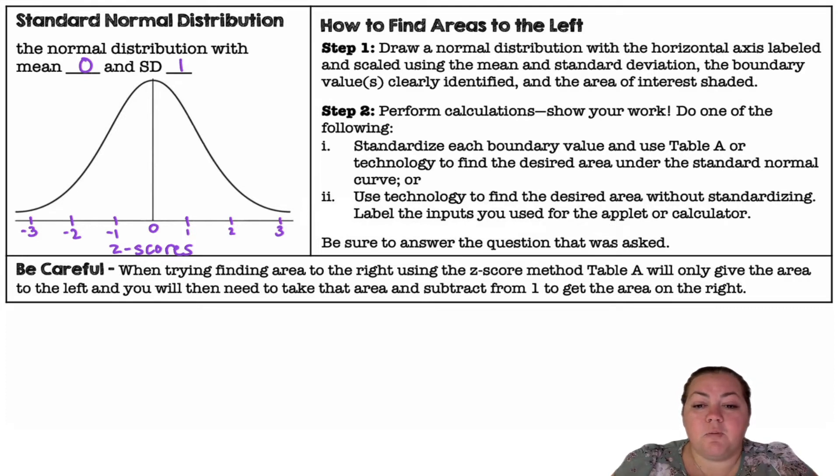Step 2, you're going to perform your calculations and show your work. Do one of the following. You can standardize each boundary value and then use table A or you can use technology to find the desired area under the standard normal curve.